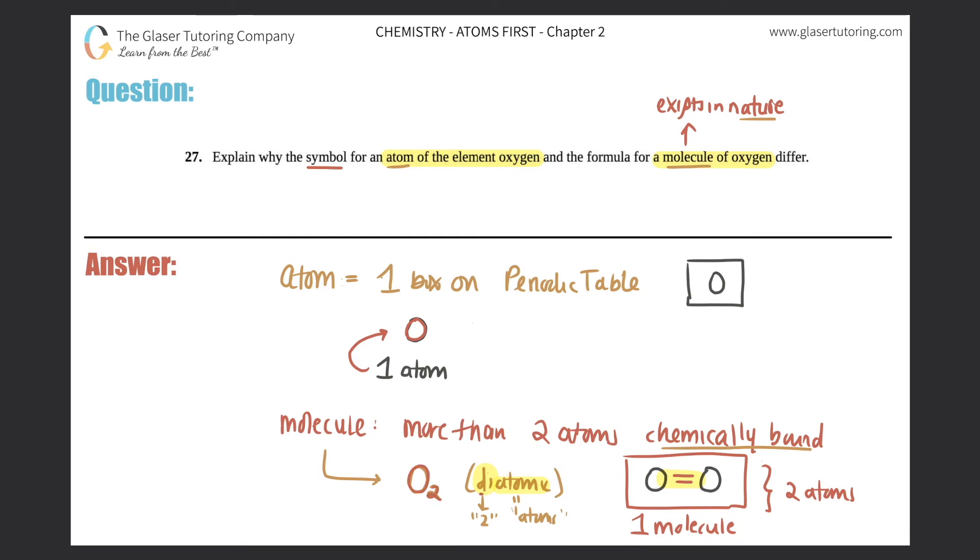Alright, so that's the difference between the symbol for an atom, which would just be O, and the symbol for a molecule of oxygen, which would be O2. It's two atoms, O and O, but they're chemically bound by, in this case, a double bond.